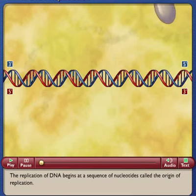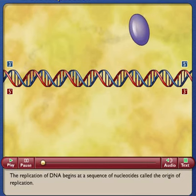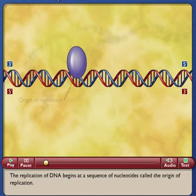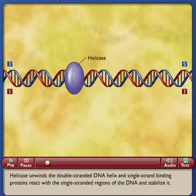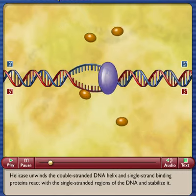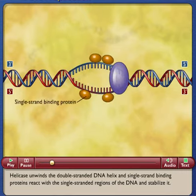The replication of DNA begins at a sequence of nucleotides called the origin of replication. Helicase unwinds the double-stranded DNA helix, and single-strand binding proteins react with the single-stranded regions of the DNA and stabilize it.